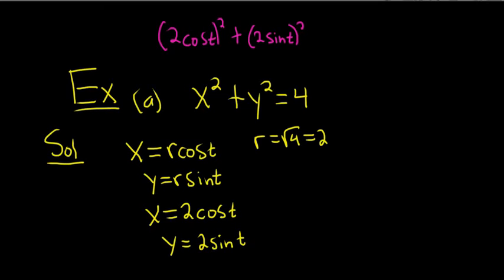And let's see what happens. Well, we square each piece. So this is 4 cosine squared t plus 4 sine squared t.